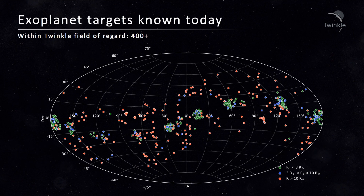Today, we know of over 4,000 exoplanets, around 3,000 of which transit their host stars. Twinkle's field of regard — the patch of sky at which the spacecraft can be pointed — is centred on the ecliptic. Twinkle is then able to point up to 40 degrees away from this plane. While this means some planets, such as those in the initial Kepler field, cannot be observed by Twinkle, there are currently over 400 known planets within Twinkle's field of regard. These vary from small, Earth-sized planets such as those in the TRAPPIST-1 system, to large, hot Jupiters such as HD 209-458b.